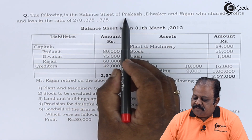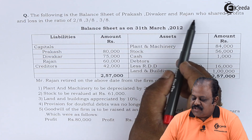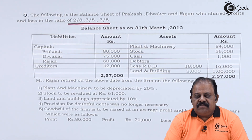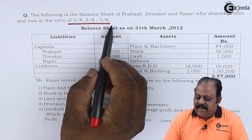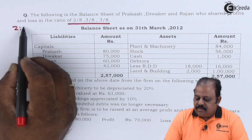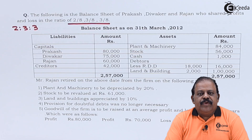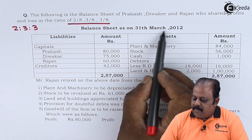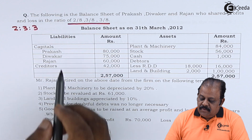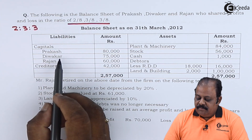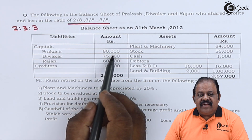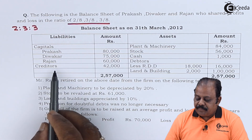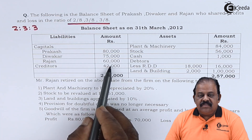Following is the balance sheet of Prakash, Diwakar, and Rajan, who share profits and losses in the ratio of 2:3:3. Balance sheet as on 31st March 2012. Liability side: capital of Prakash 80,000, Diwakar 75,000, Rajan 60,000.